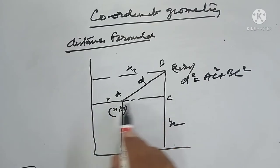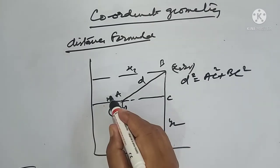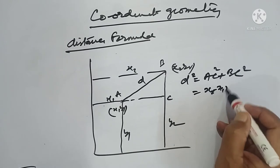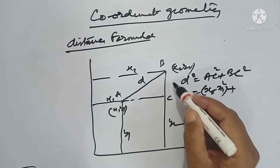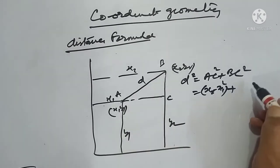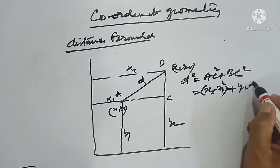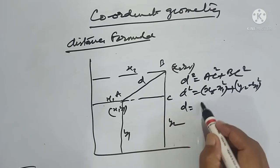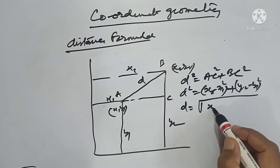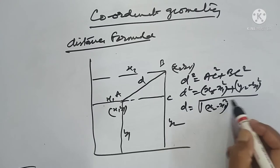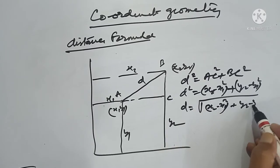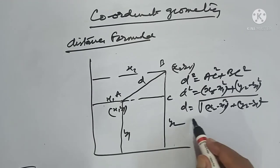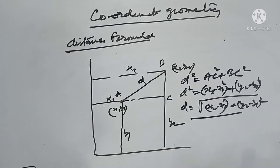Now AC is X2 minus X1. So D squared equals (X2 minus X1) whole squared, plus (Y2 minus Y1) whole squared. And therefore, D is equal to the square root of (X2 minus X1) whole squared, plus (Y2 minus Y1) whole squared. So this is what we call the distance formula.